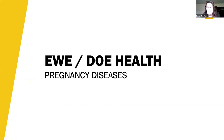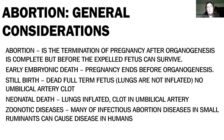Moving into pregnancy diseases of interest — the first thing we'll talk about is diseases associated with abortion. Abortion by definition is the termination of pregnancy after the organs of the fetus have developed, but before that fetus can survive outside of the uterus. As opposed to early embryonic death, which is when the pregnancy is terminated before the organs of the fetus have even begun to develop. Oftentimes early embryonic death isn't something we may even recognize, whereas with abortion we generally do find the fetus and placental tissues.